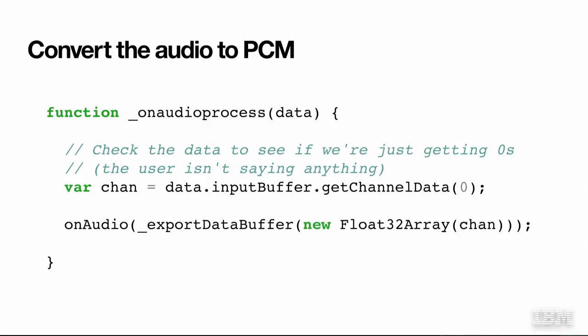I promised to tell you about this audioProcess function — this is really the guts and meat of everything, how this works. Basically what this is saying is we're going to grab the data coming off of the audio stream — ones and zeros — and then convert it. This is the dirty trick: I'm going to convert it into PCM16.